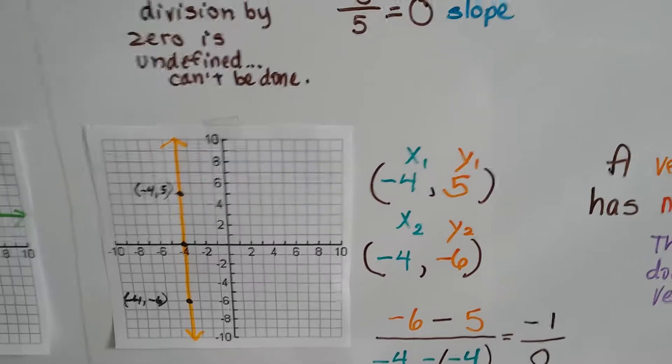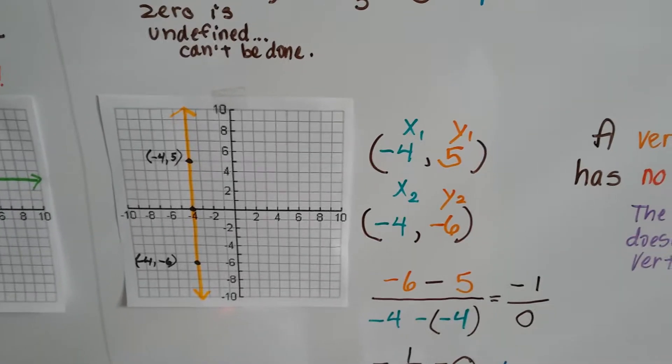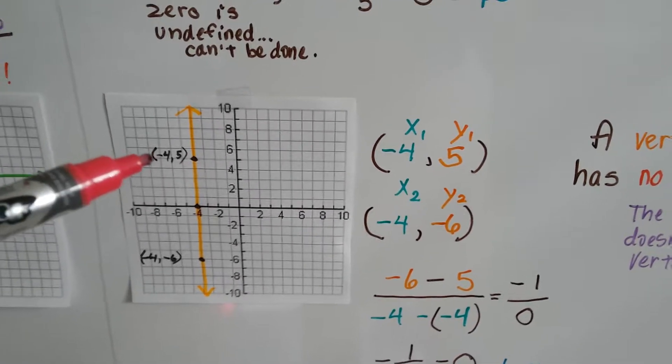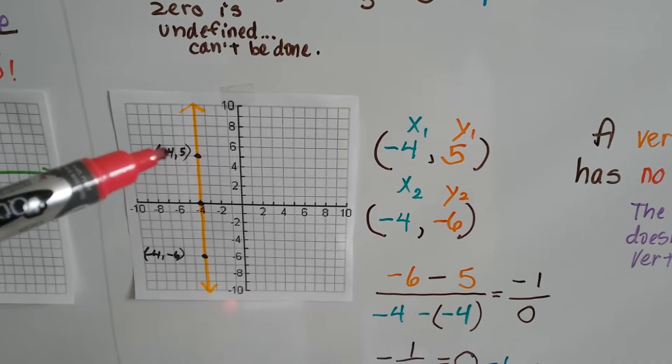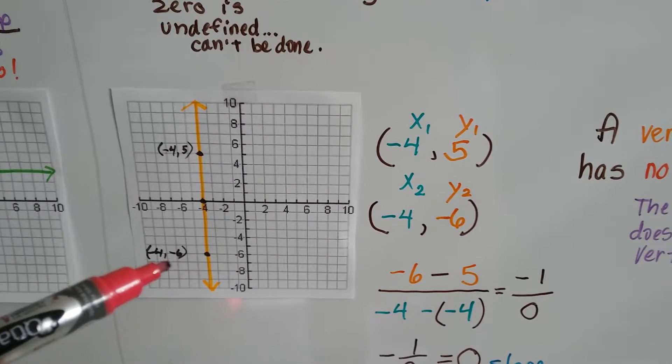Take a look at this one. We've got a vertical line here with points negative 4, 5 for x1, y1, and negative 4, negative 6 for x2, y2.